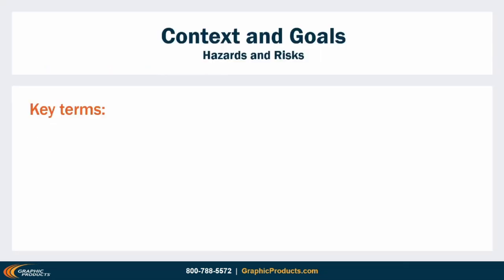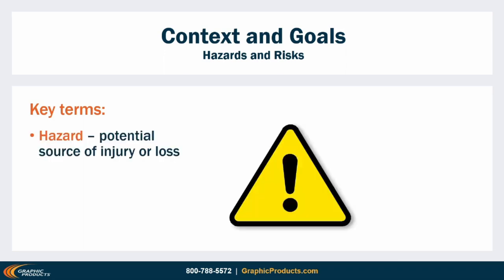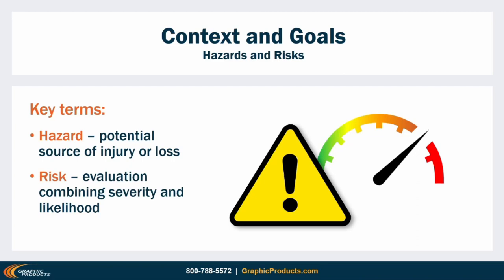First, I need to define a couple of big terms. A hazard is a potential source of injury, damage, or loss — the sharp edge on a knife is a hazard, and arc flash is one of several hazards associated with electrical power. It's not always possible to get rid of hazards. Instead, we focus on risk. Risk is a complex evaluation of a hazard in a specific situation, combining the severity of the potential injury and the likelihood of that injury actually occurring. Risk can almost always be reduced, whether by making a potential injury less severe or less likely to happen.